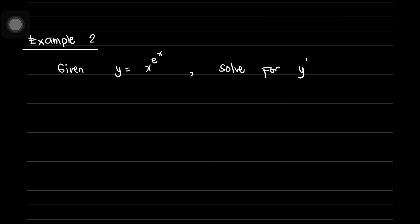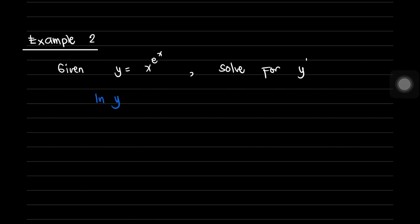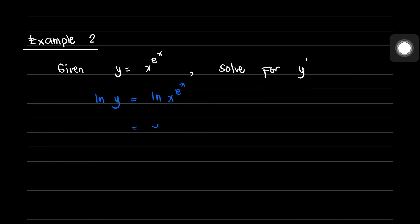For our second example, we are given y equals x raised to e raised to x, and we're going to solve for y prime. Again, the first step is to take the natural logarithm on both sides: ln of y equals ln of x raised to e^x. From the property of logarithm, this can be written as e raised to x multiplied by ln of x equals ln of y.